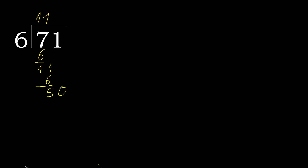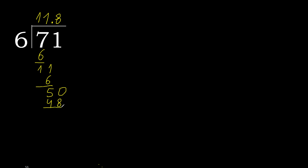There is no more number, so complete — always complete with 0, here with a point. Complete 0, point. 50. 6 multiplied by 9 is greater. 6 multiplied by 8 is 48. Subtract.